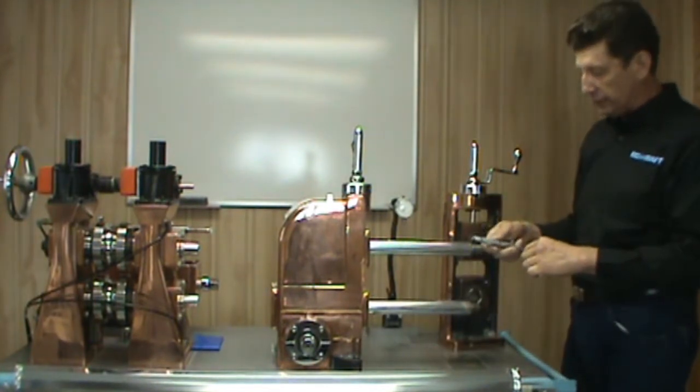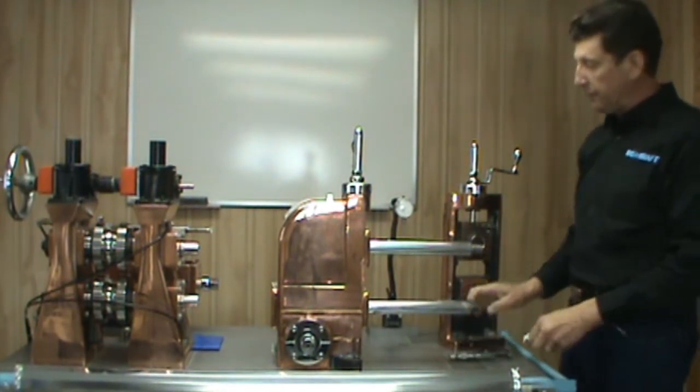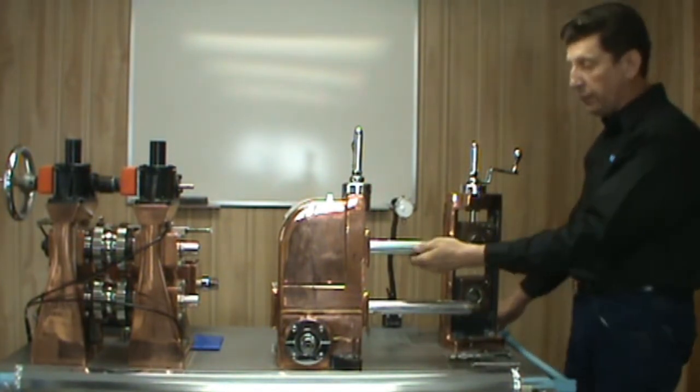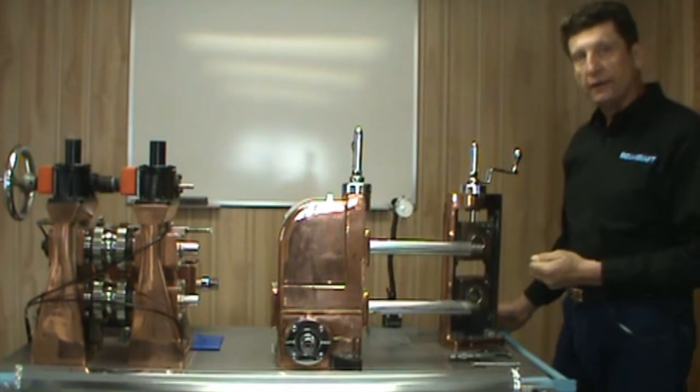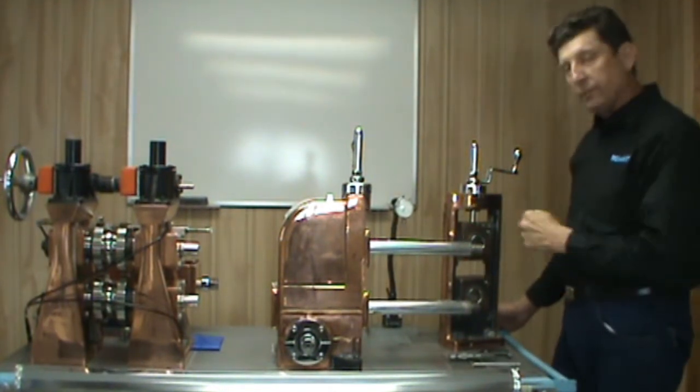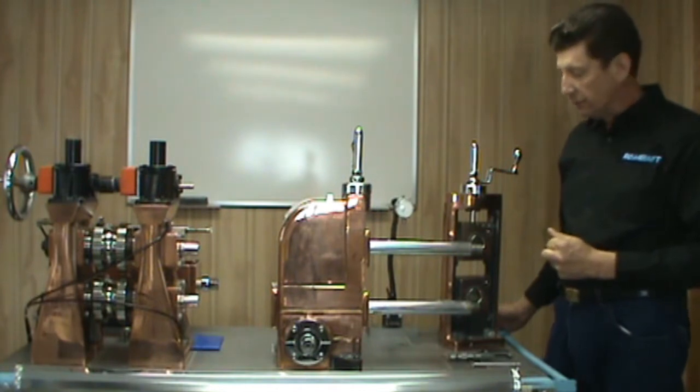You want to use the same type of one thou per one inch tolerance that we used when we were checking the OD of the shafts or the driven passes in previous Tech Tip videos. Use the same thing for the oversized bore there for the sleeve as well.